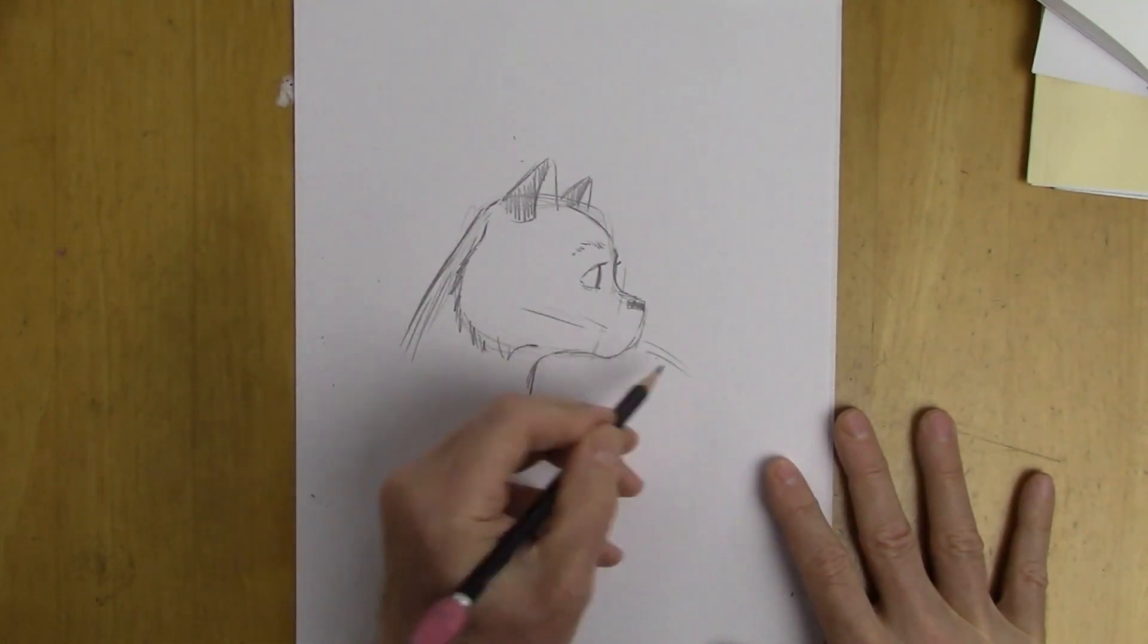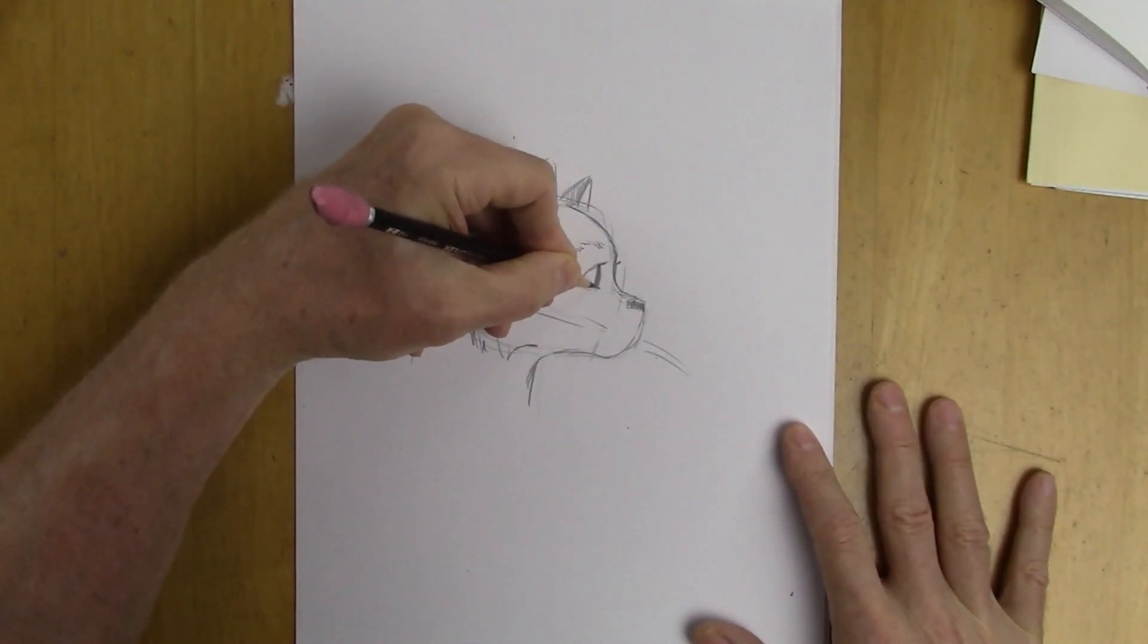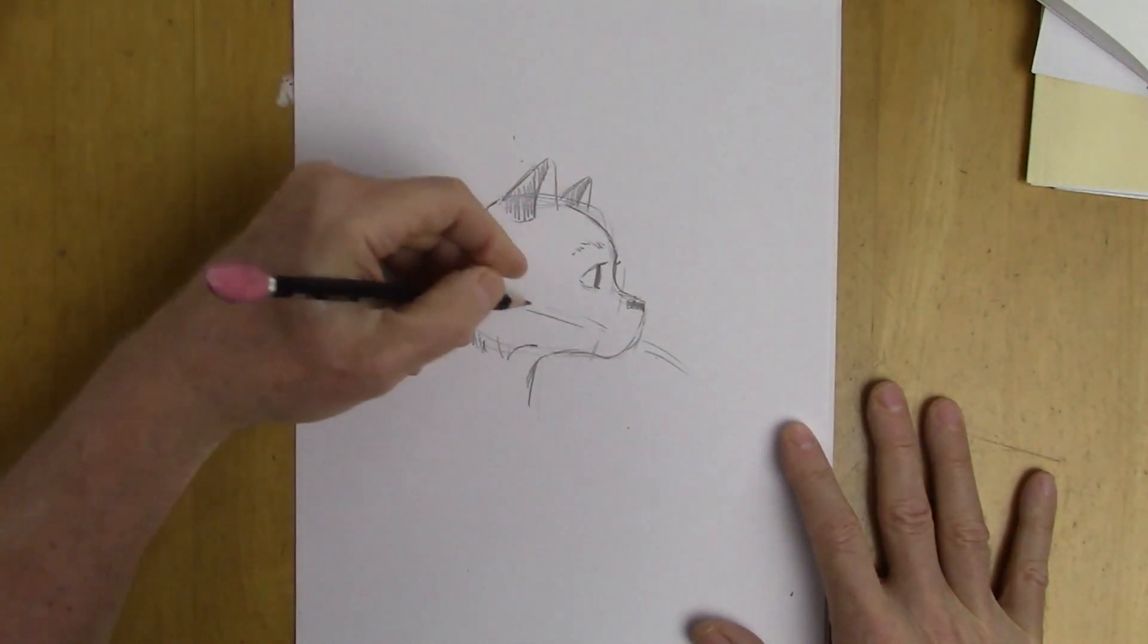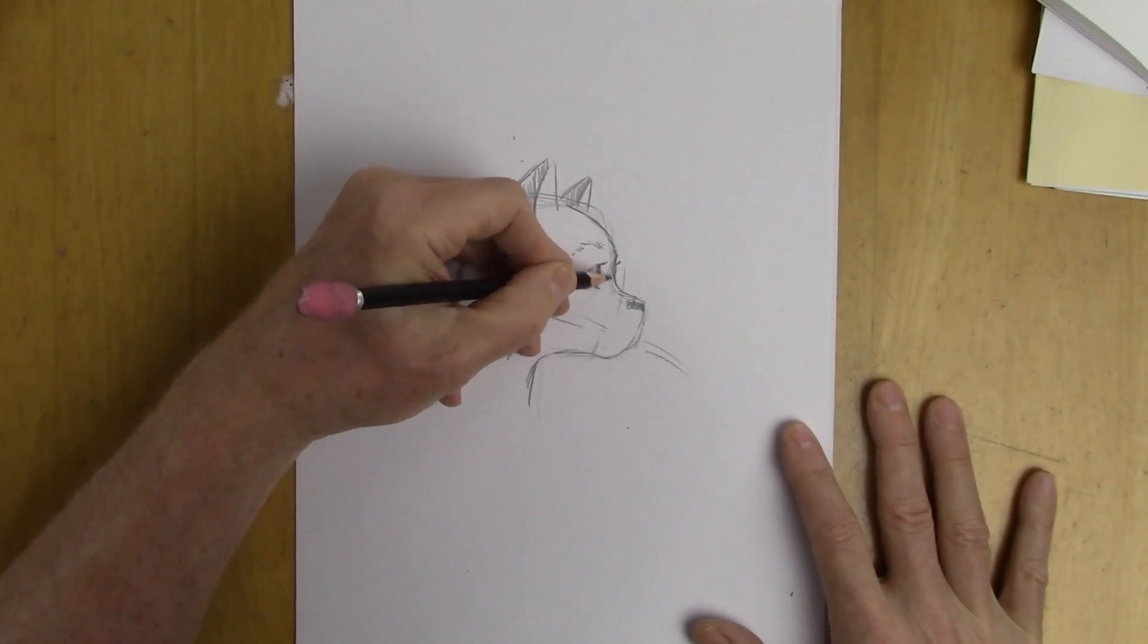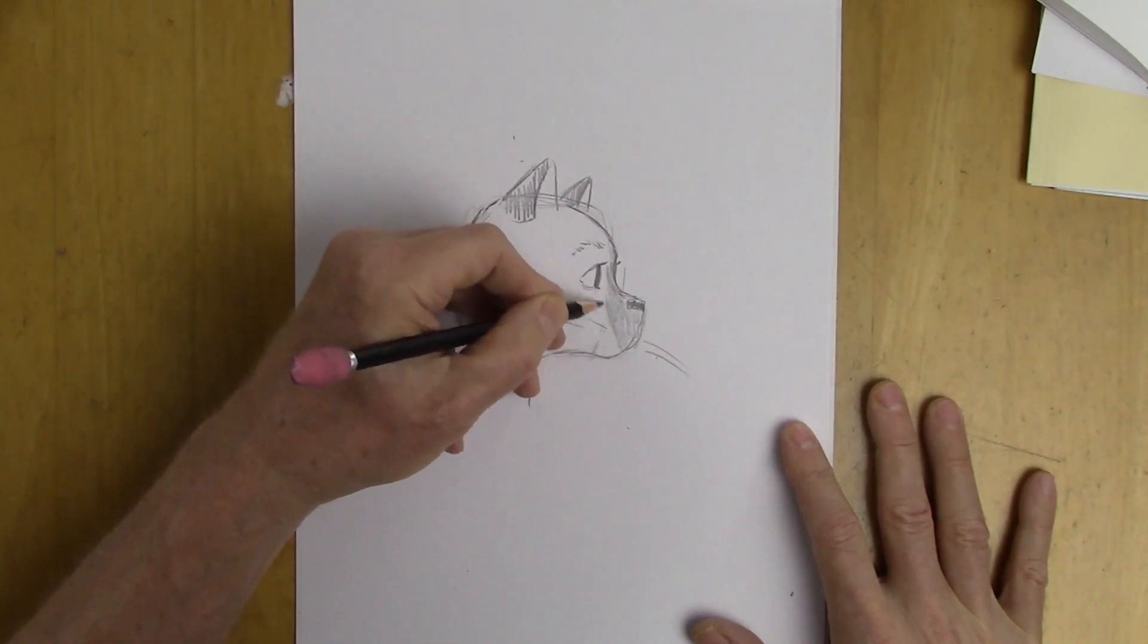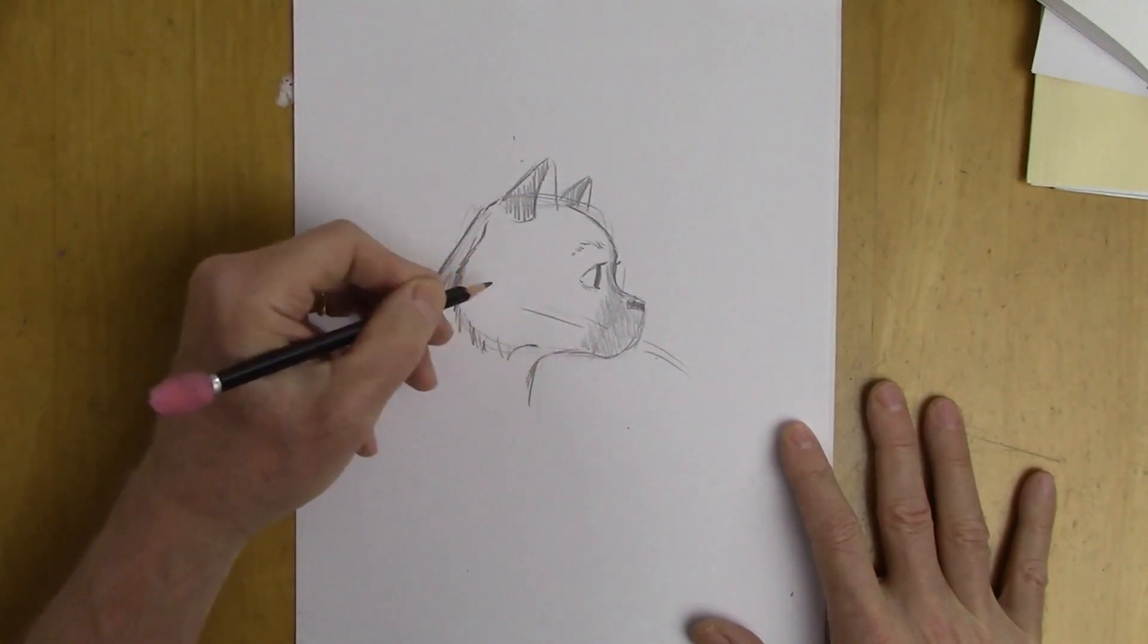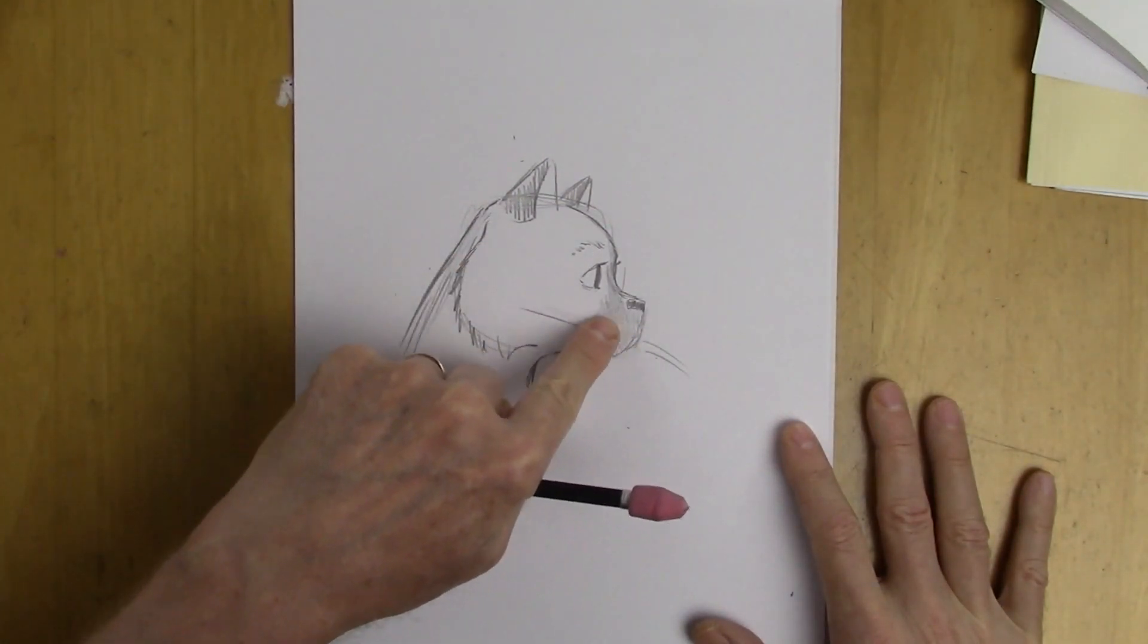Whiskers. And we'll shade over here. Because they have a lot of shadow in the front. The muzzle is darker than the rest, same sort of shade as the ears. And you can just use your finger and smooth that out.